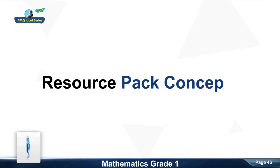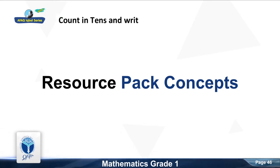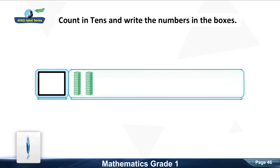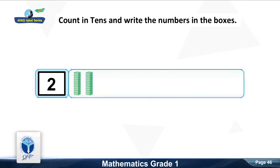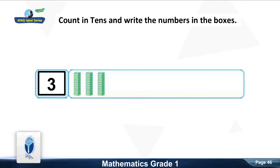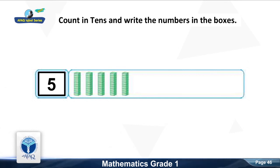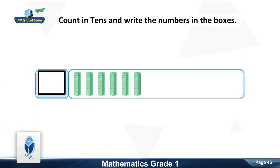Now we move to the next resource pack concept. Count in tens and write the numbers in the boxes. First: good, one ten — write one in the box. Next: good, two tens — write two. Next: good, three tens — write three. Next: good, four tens — write four. Next: good, five tens — write five. Next: good, six tens — write six.